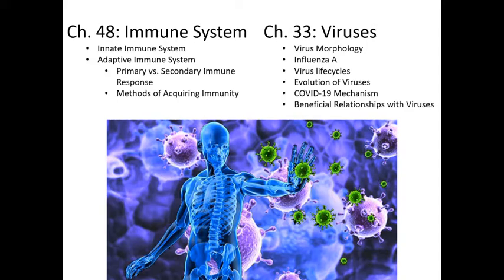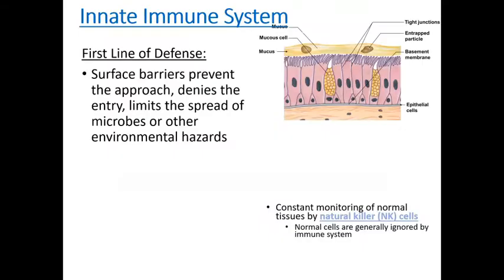Hello, everyone. Today's lesson is going to cover two chapters from your textbook. First of all, we'll be talking about the immune system, specifically of humans, but this is fairly reflective of how other animals protect their bodies from invaders as well. We'll specifically talk about the innate versus adaptive immune system. Then we will talk specifically about viruses — their structure, strategies, and a couple of example viruses.